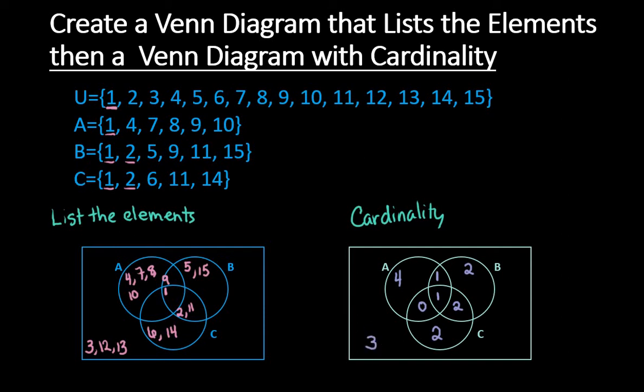So a check that you can do to make sure that everything works is you can add them all up. So in A, I have 4, 5, 6. And we can see right here that we had 6 in A.